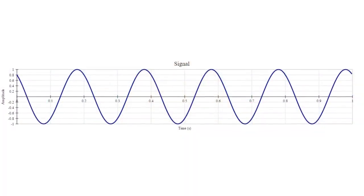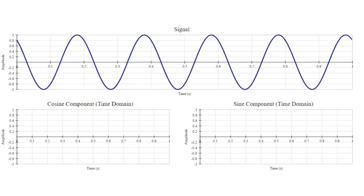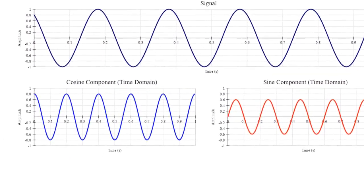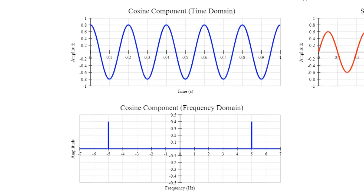The Fourier transform describes how much each frequency contributes to an overall signal, in terms of the cosine and sine components at that frequency. Take this simple 5 hertz sinusoid as an example. If I break it down into its component cosine and sine waves, they both have a frequency of 5 hertz, but their amplitudes are such that when added together, they produce the 5 hertz sinusoid we started with. If I perform a Fourier transform on the signal, the cosine component shows a peak at 5 hertz, but whereas the amplitude of the cosine wave in the time domain is 0.8, the amplitude in the frequency domain is only 0.4. And there's another similar peak at minus 5 hertz.